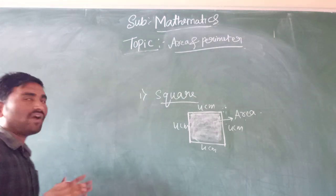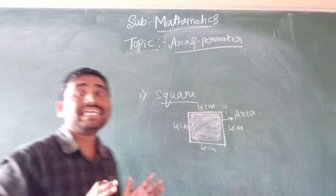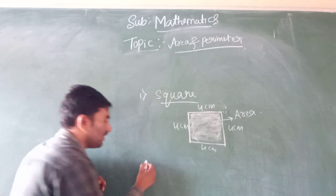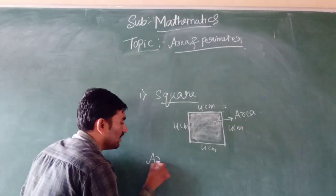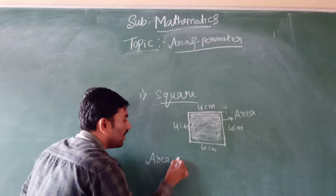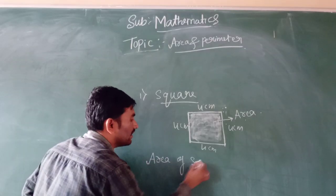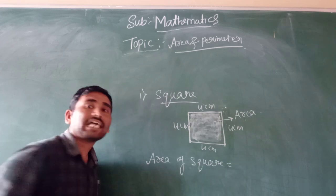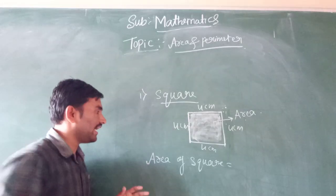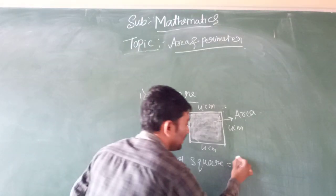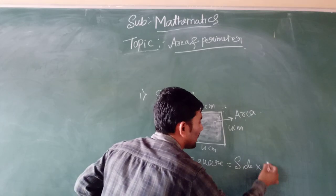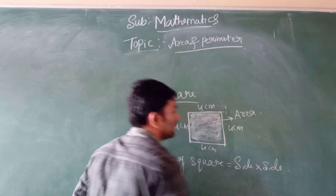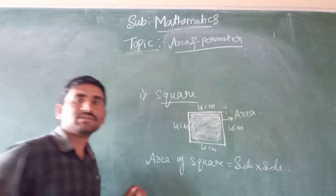Okay my dear students, how to find the area of a square? Area of square formula: side into side — that is the formula for area of a square.